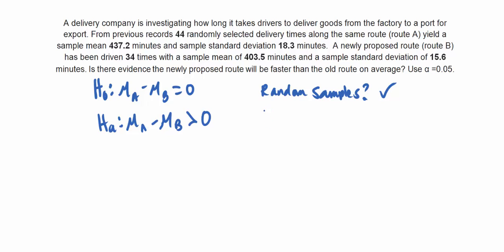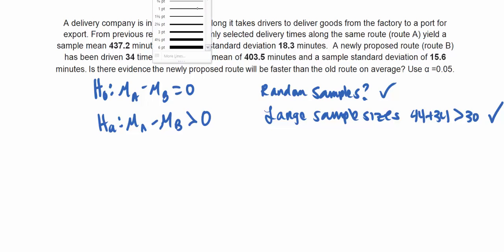And we need to have large sample sizes. So specifically that is that each sample size, if we add them together, is greater than 30. So 44 plus 34 is greater than 30 for sure. So this condition is also met. Once we establish our conditions have been met, then we can calculate our t-test statistic.